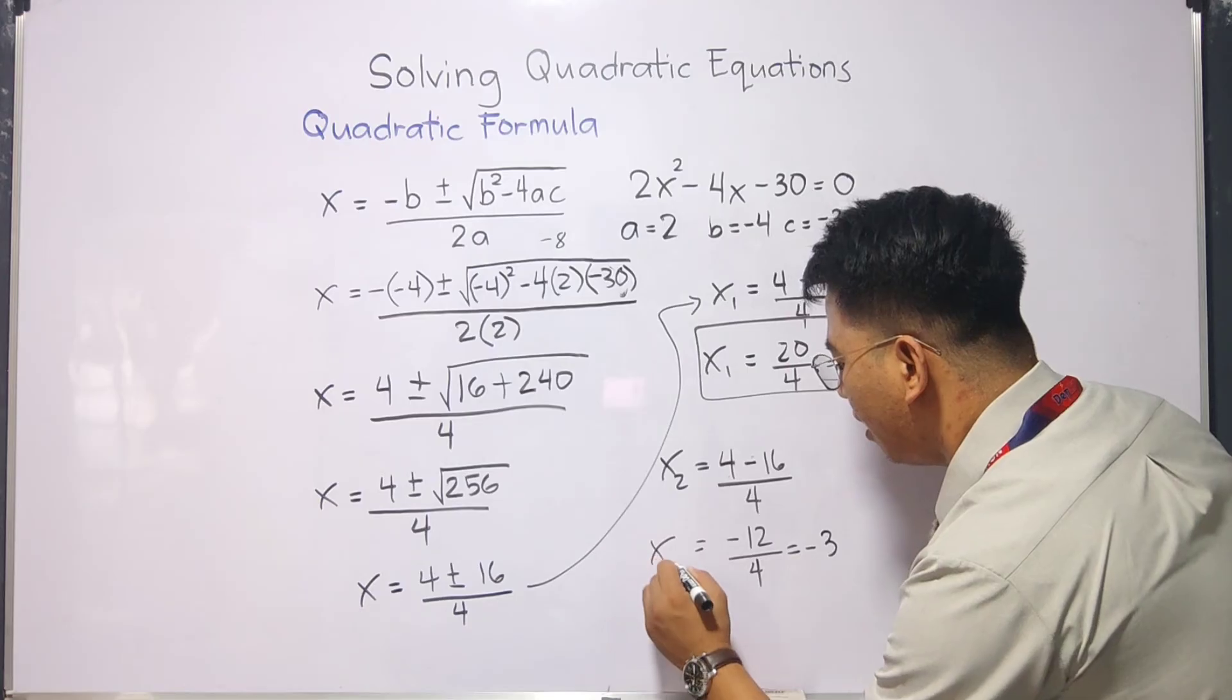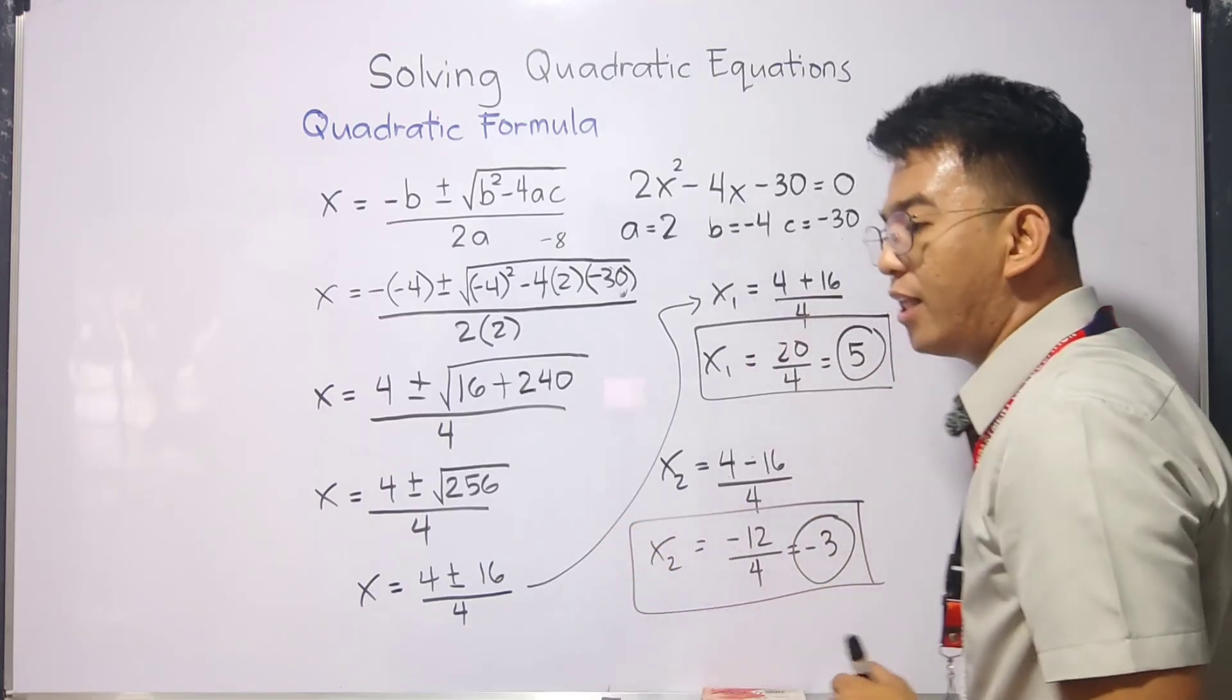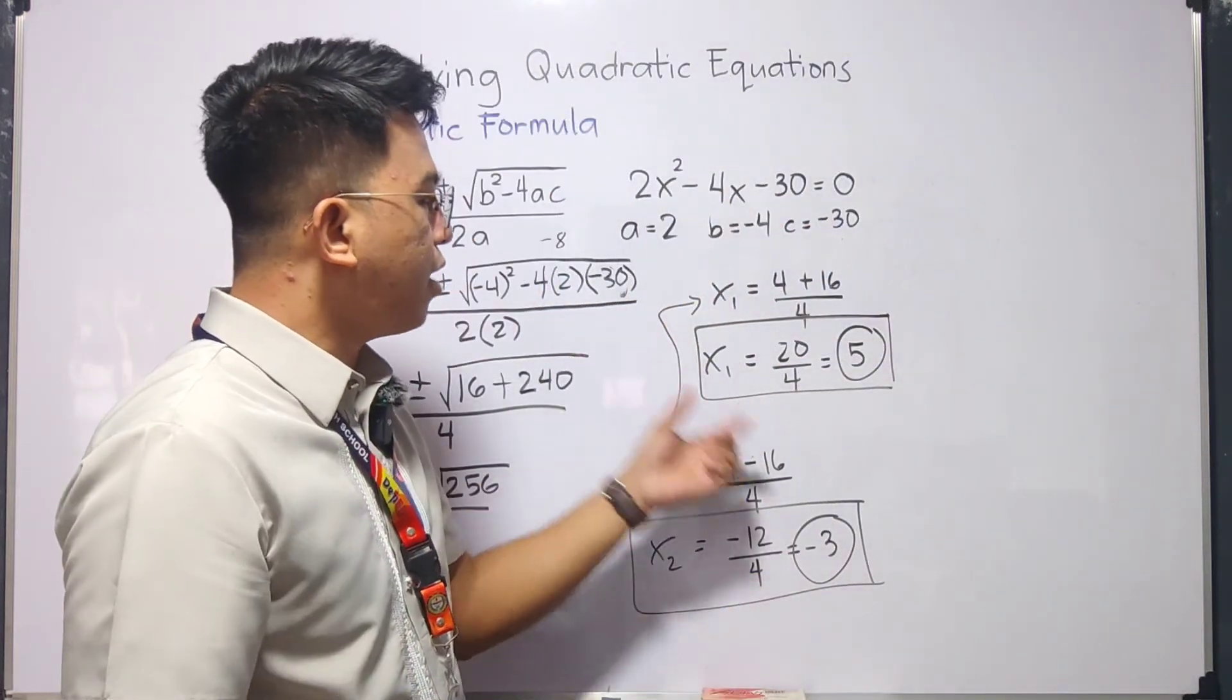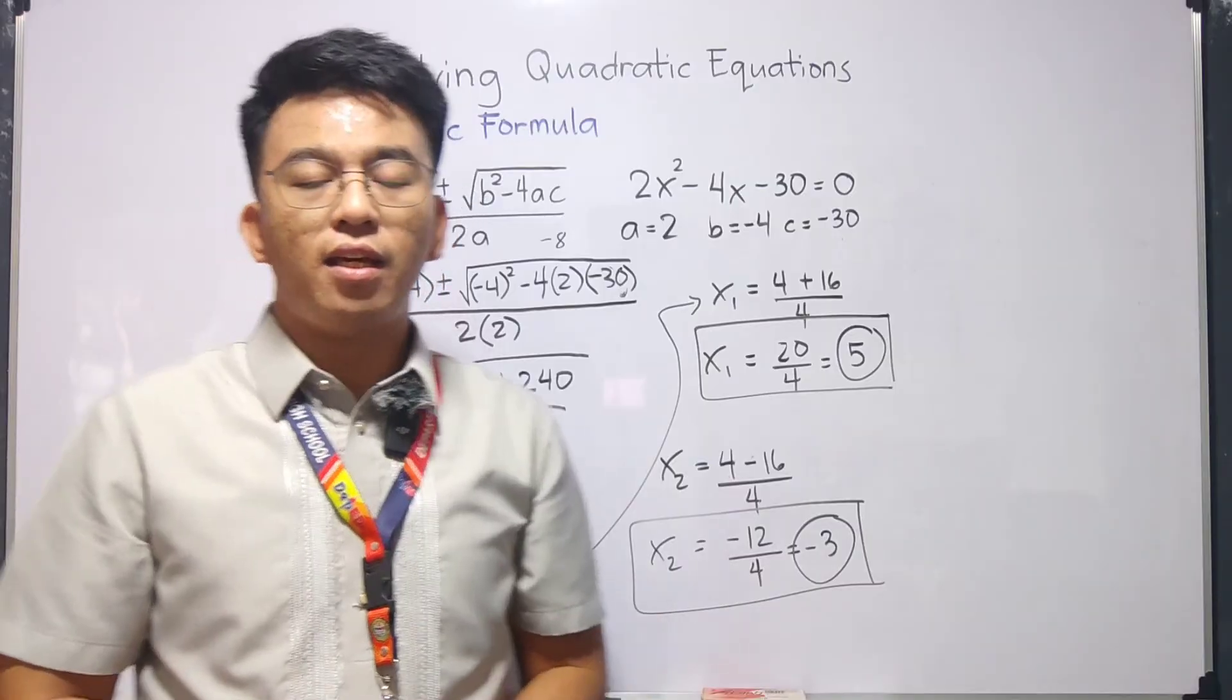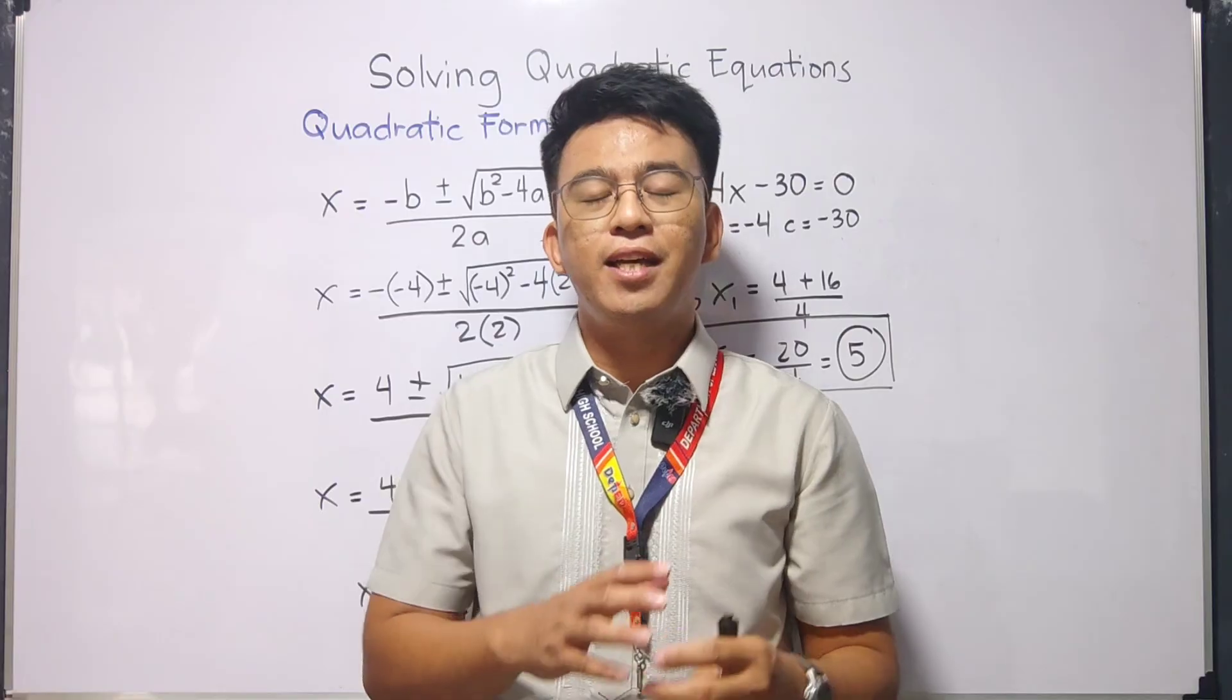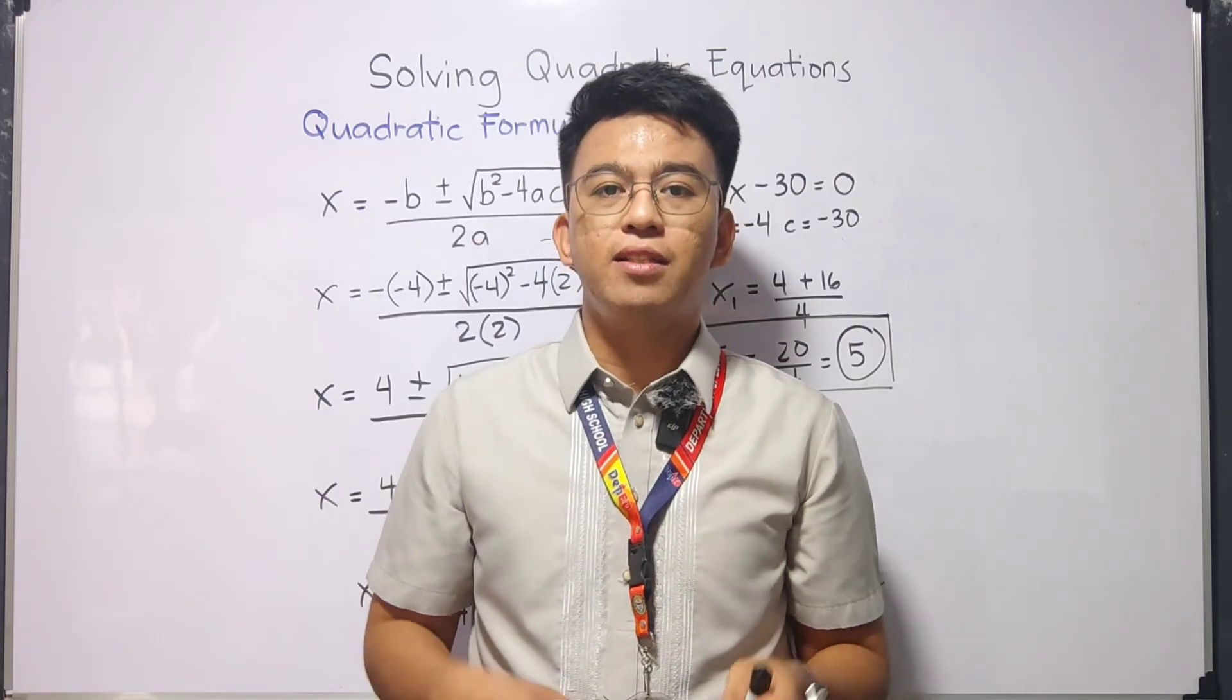So as you can see, this is now the second value of x. We have x is equal to negative 3. Now for this given equation, the solutions are 5 and negative 3. Now guys, I hope you learned something from this video on how to use the quadratic formula in solving quadratic equations.